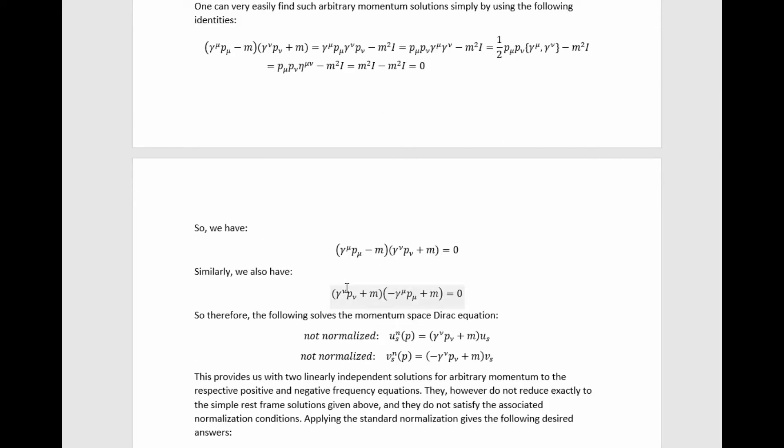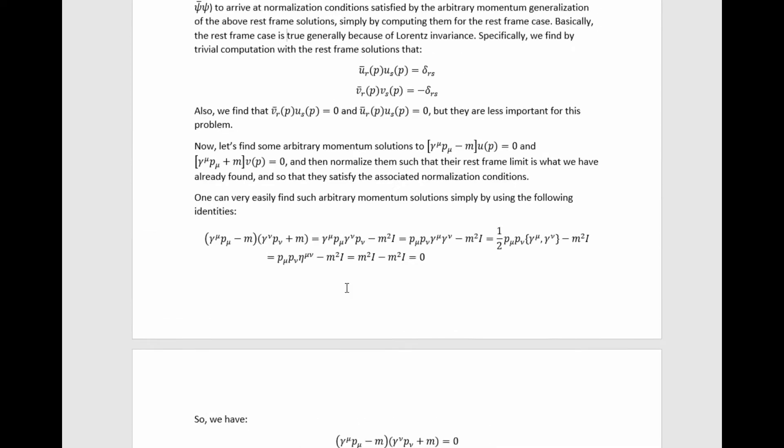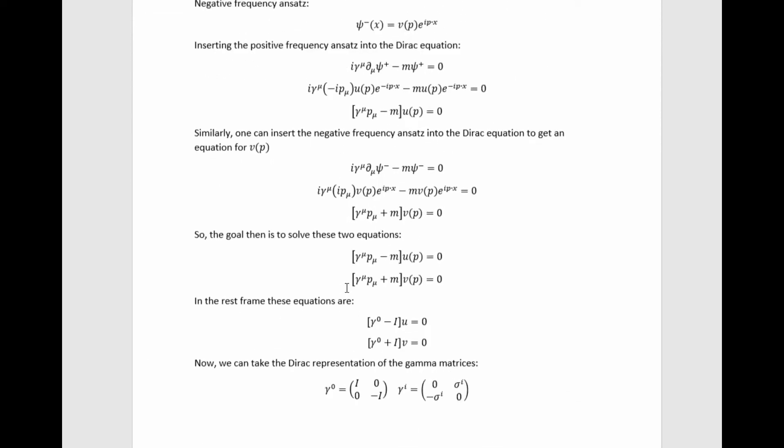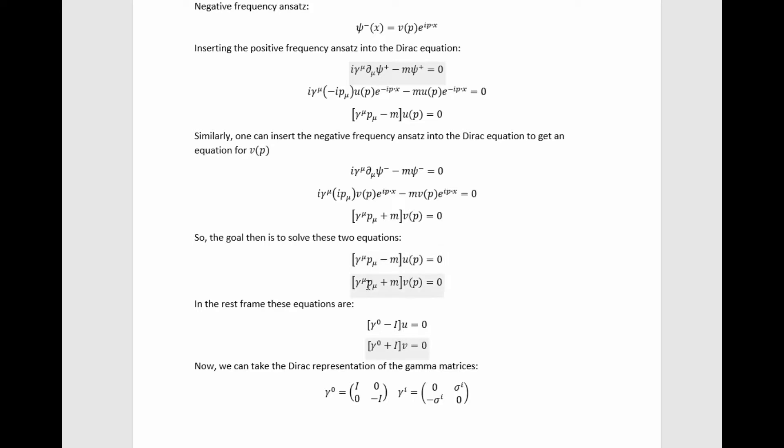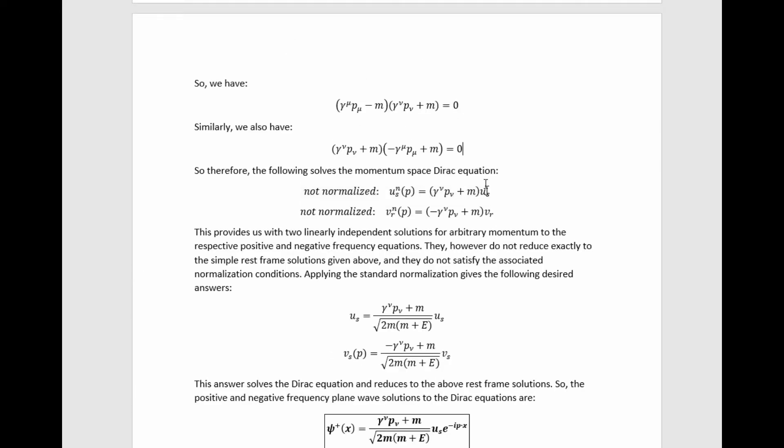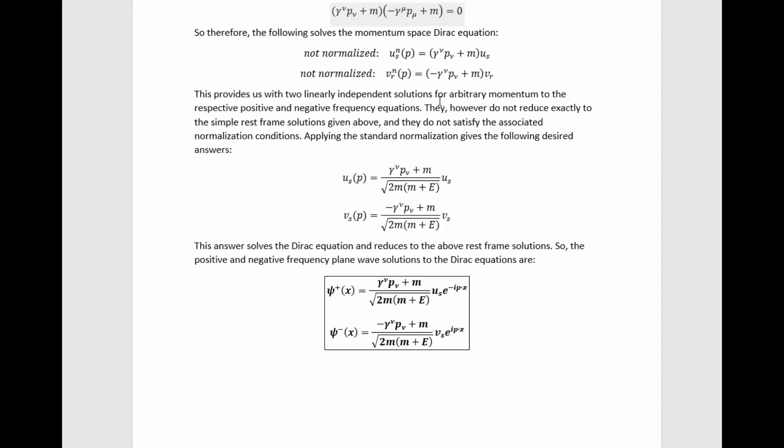So with these identities in mind, we realize that we can write solutions to the equations we were trying to solve up here that are momentum-dependent simply by multiplying these rest frame spinors by these two factors. We find that if we plug these into the equations we're trying to solve, we just arrive at these rest frame spinors multiplied by factors like these. This provides us with two linearly independent solutions for arbitrary momentum to the respective positive and negative frequency equations.